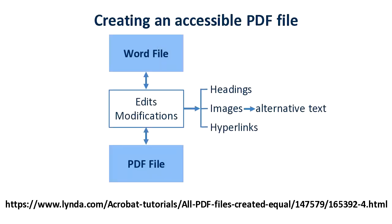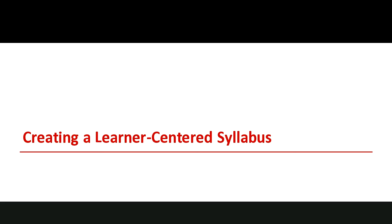If you have a Word file, you can edit the modifications and create a PDF file, considering headings, images with alternative text, and any hyperlinks. There's a tutorial resource — the URL is on the screen — that does an excellent job explaining how to do this. It's almost four hours long but organized in sections you can view separately. I highly recommend looking at it as a resource to help you create accessible files for your class and syllabus.